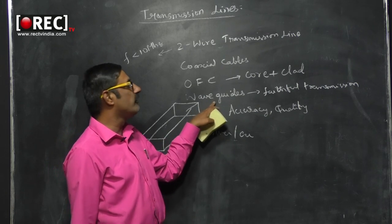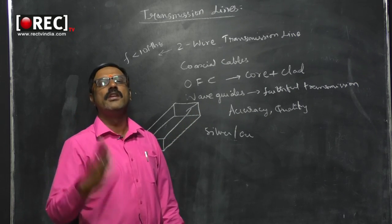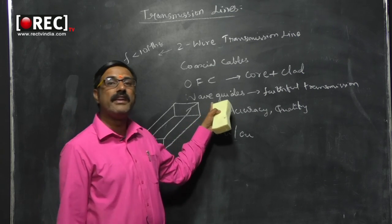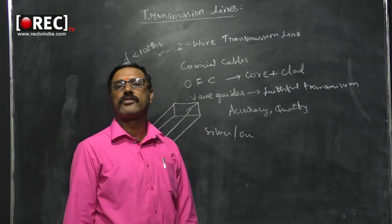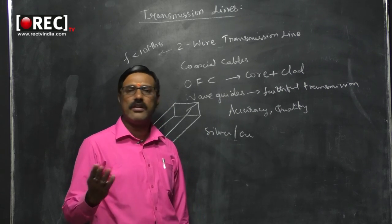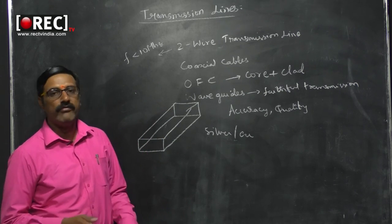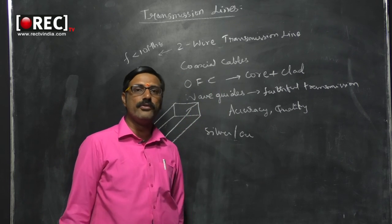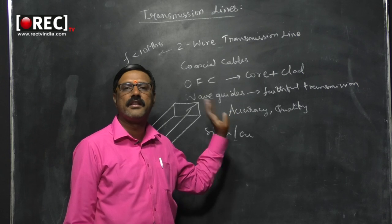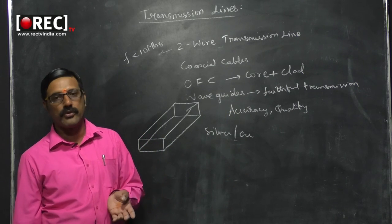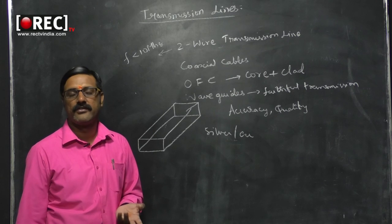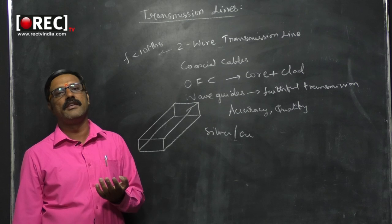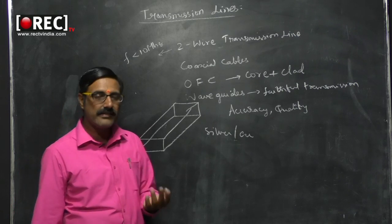Propagation is possible one hundred percent in waveguides. However, the negative point is that waveguides are very expensive — a meter of waveguide costs something like four to five thousand rupees. So wherever it is compulsorily required, only there we use them — generally in air traffic controllers, radars, military applications, and satellite communications.